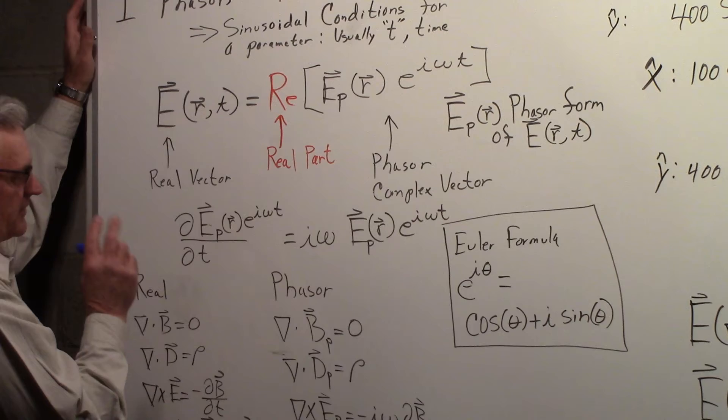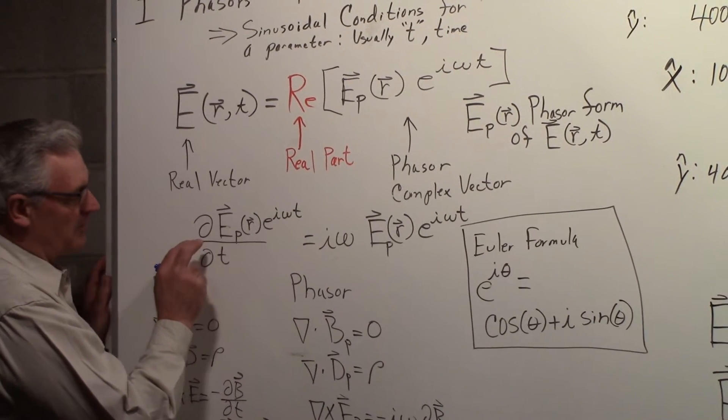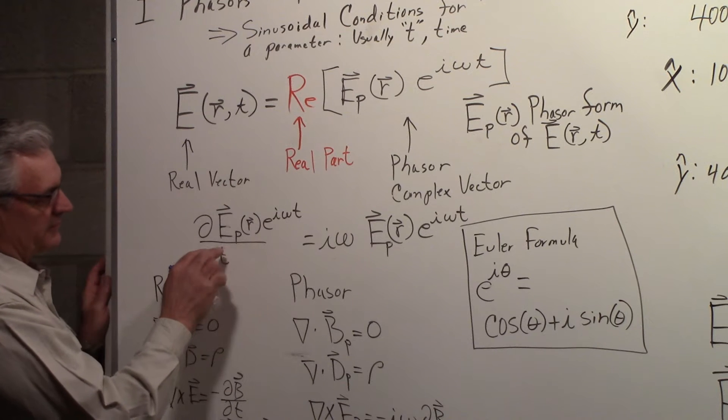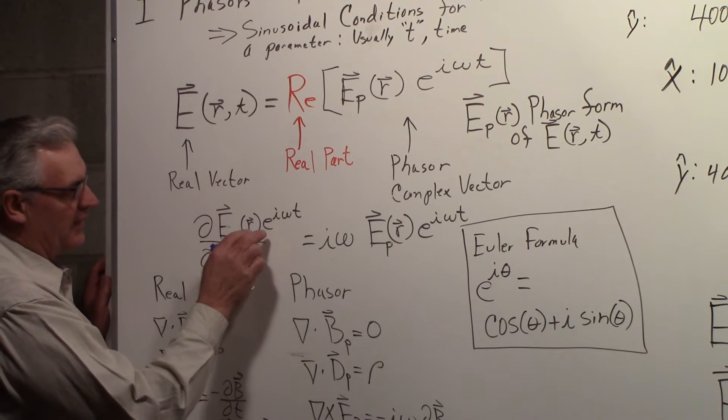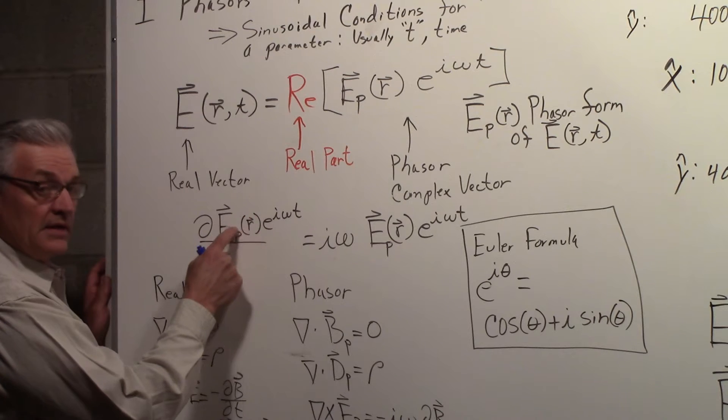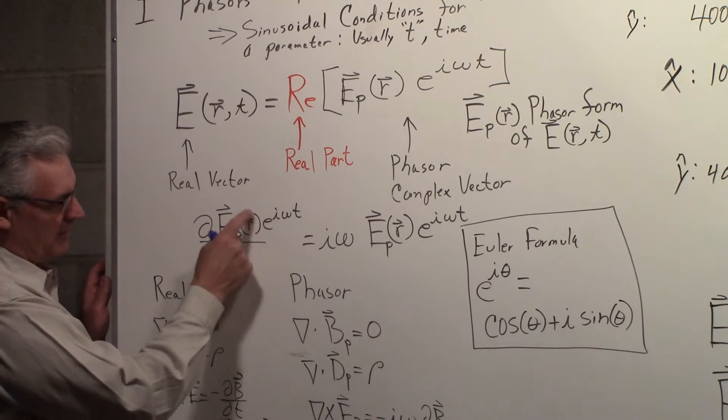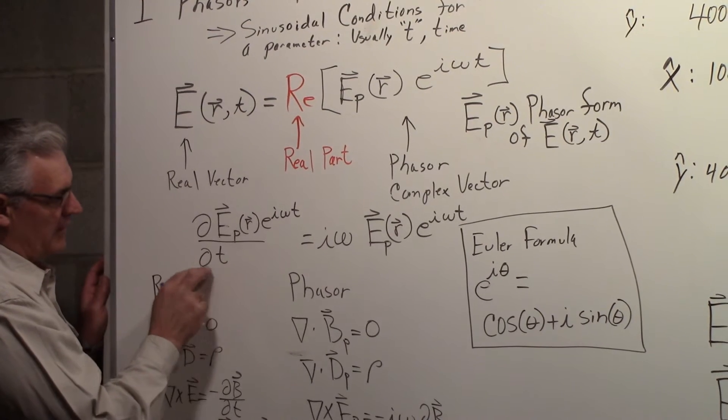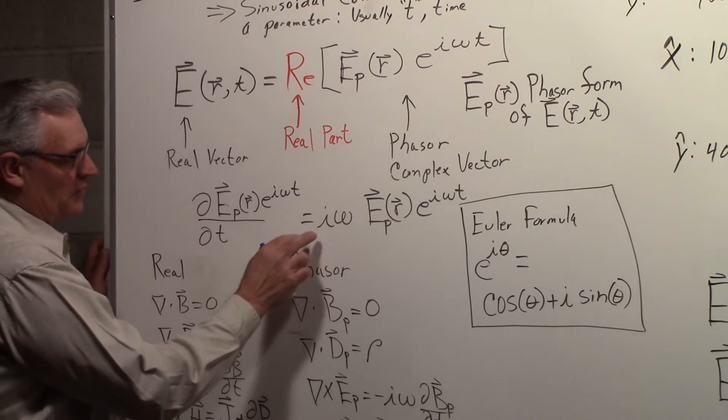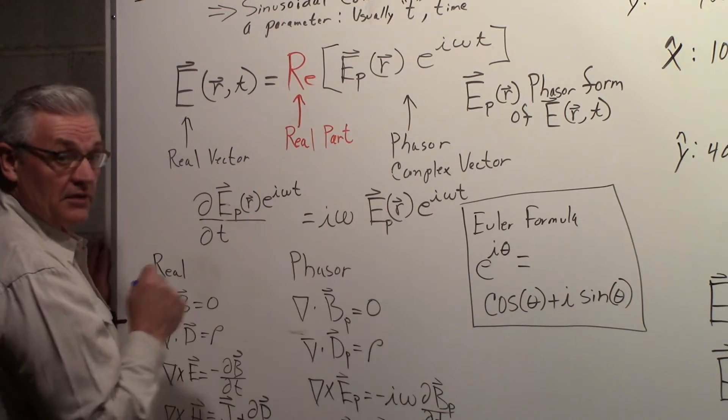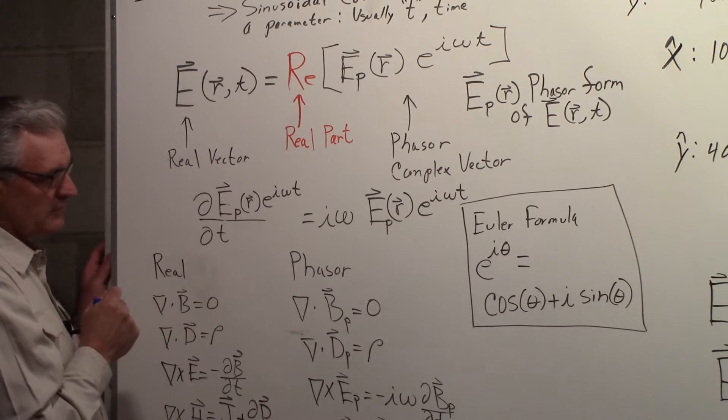The advantage of this phasor form is this. If we take the partial of this phasor form here, E sub p of r, e to the i omega t, notice there's no t parameter in here, no t behavior in there. Taking the partial with respect to t, we'll just get i omega, and then we get back the original, E p, e to the i omega t.